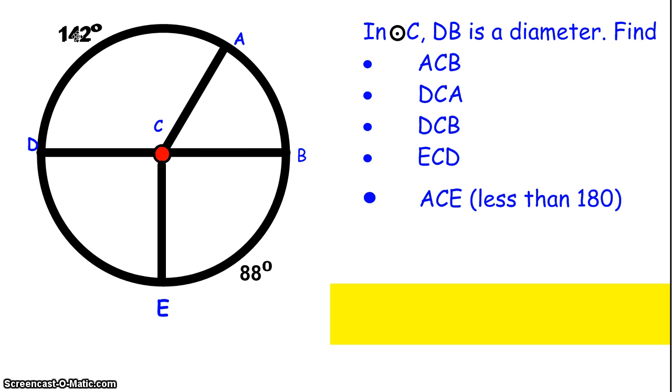The first arc that I know is 142. If arc AD is 142, then that means that angle ACD, or DCA, is 142 as well. I'm just going to put that in here. I also know arc BE is 88 degrees. That means that angle BCE right here is also 88 degrees. Now we can use that information to find the rest of the things that we need.